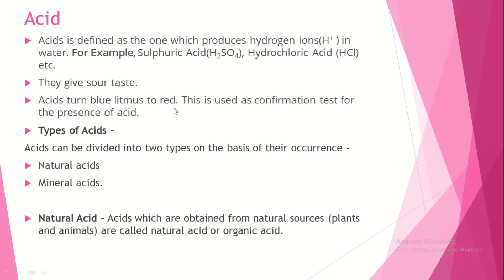Acids give a sour taste and acids turn blue litmus paper to red. So if you dip a blue litmus paper into acid, its color changes to red. This is a confirmation test to check whether the given liquid is an acid or not.